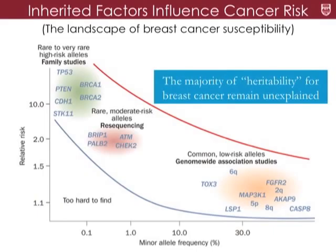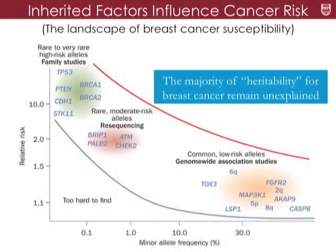Despite knowing a lot about which inherited features influence breast cancer risk, the majority of heritability for breast cancer remains largely unknown. There's definitely more in the genome going on beyond the risk factors in this chart. My research is more focused on the relatively common genetic features in the genome which increase or decrease breast cancer risk by very small amounts.